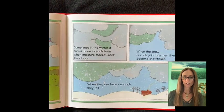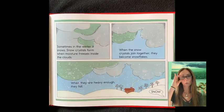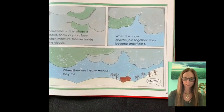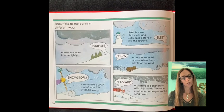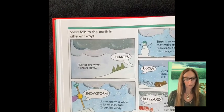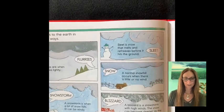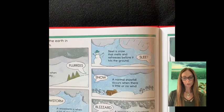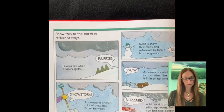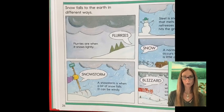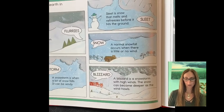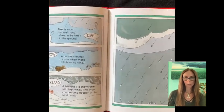Sometimes in the winter it snows. Snow crystals form when moisture freezes inside the clouds. When the snow crystals join together they become snowflakes. When they are heavy enough they fall. Snow falls to the earth in different ways. Flurries are when it snows lightly. Sleet is snow that melts and refreezes before it hits the ground. A normal snowfall occurs when there is little or no wind. A snowstorm is when a lot of snow falls. It can be windy. A blizzard is a snowstorm with high winds. The snow can become deeper as the wind howls.